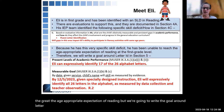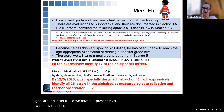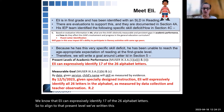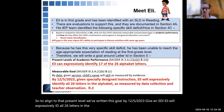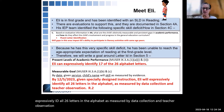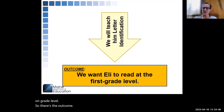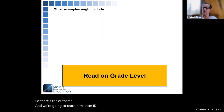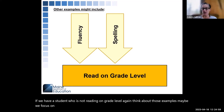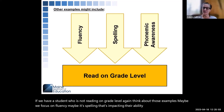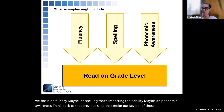So we have our present level: Eli can expressively identify 17 of the 26 alphabet letters. To align to that present level, we've written this goal: by 12-5-2023, given SDI, Eli will expressively identify all 26 letters in the alphabet, as measured by data collection and teacher observation. Teaching this skill to Eli will facilitate improvement in his ability to read on grade level. And we're going to teach him letter ID. If a student is not reading on grade level, maybe we focus on fluency, spelling, or phonemic awareness — you might need to address more than just letter ID for Eli.